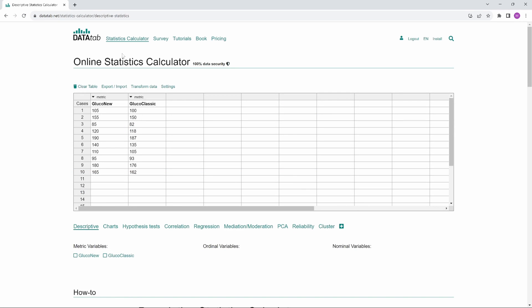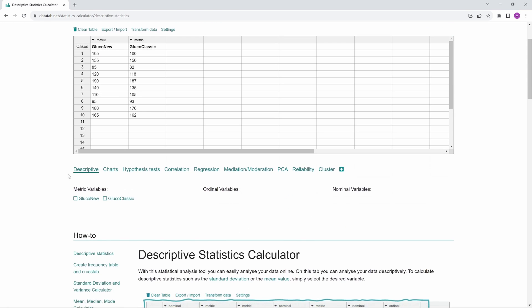If you like, you can create a Bland-Altman plot for free online using Datatab. Just go to datatab.net and copy your own data into this table. Then click on either Descriptive or Charts.